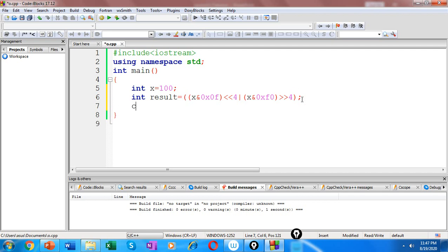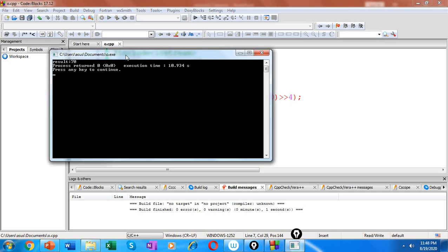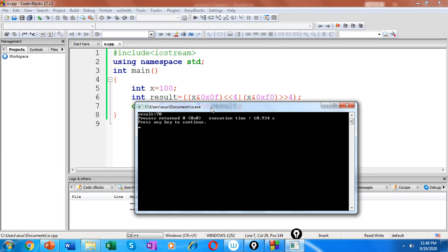Now let's use a cout statement and verify our result. So our program works fine. As expected we are getting the result 70. So we have swapped the nibbles. So this is about the bitwise OR operator in C++.